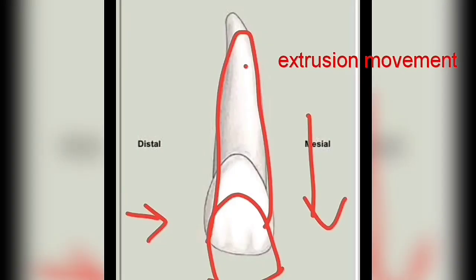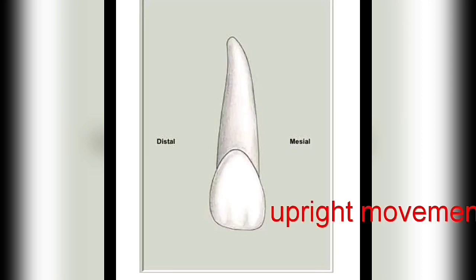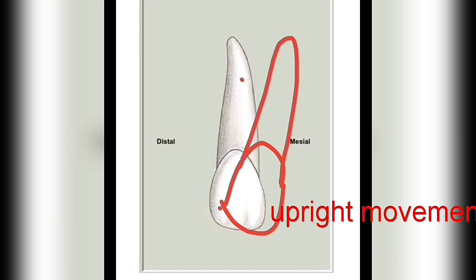Another example is upright movement. When the crown is tipped in the mesiodistal direction with the root tipped in another direction, and the root is brought back to a parallel orientation, it is called upright movement.